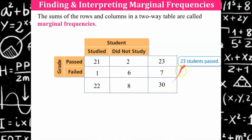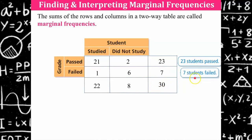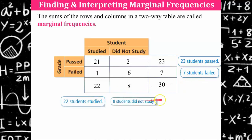Here's how you would describe marginal frequencies if asked to interpret. If asked to find them, you add the totals column and row to your table. If asked to interpret: 23 students passed, 7 students failed, 22 students studied, 8 students did not study, and 30 students were surveyed. That's the difference between finding and interpreting.